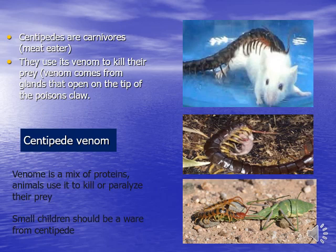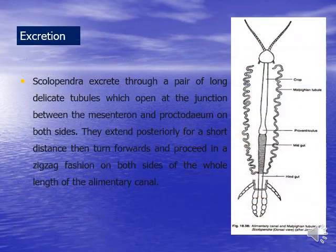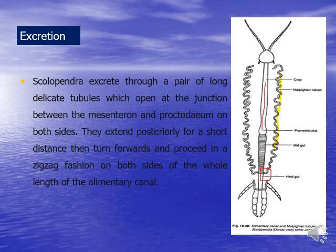Small children should be aware of centipedes. Scolopendra excretes through a pair of long, delicate Malpighian tubules which open at the junction between the midgut and the hindgut. They extend posteriorly for a short distance, then turn forwards and proceed in a zigzag fashion on both sides along the whole length of the alimentary canal.